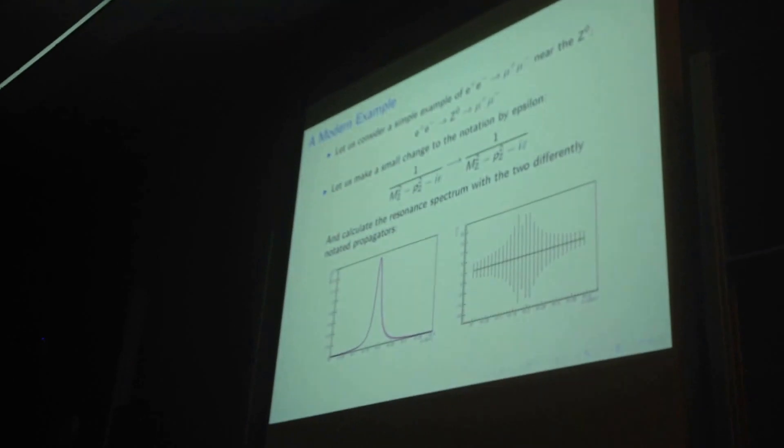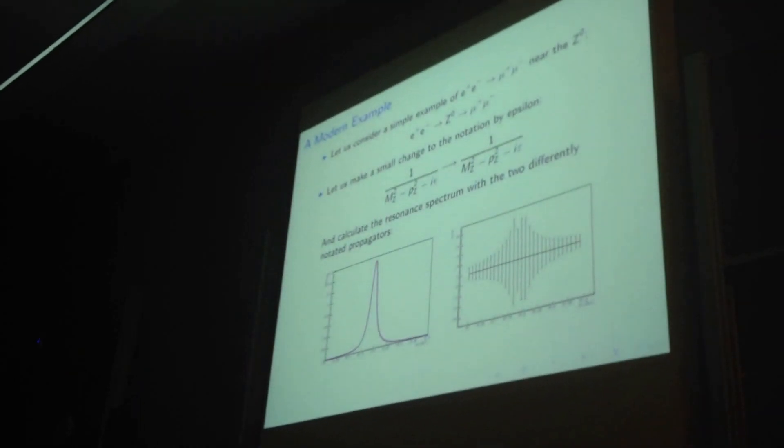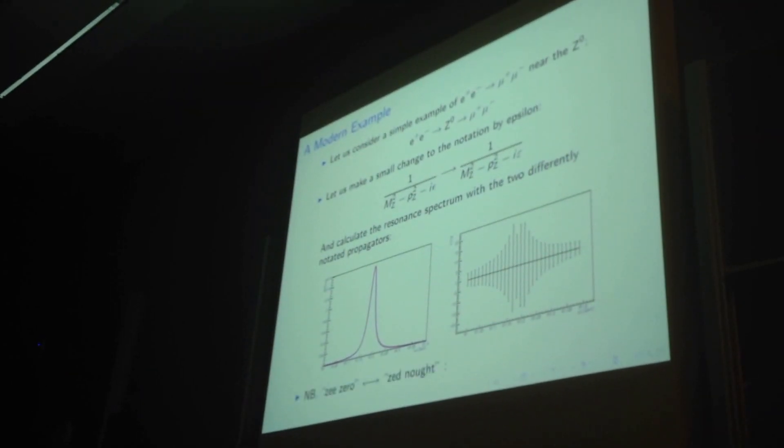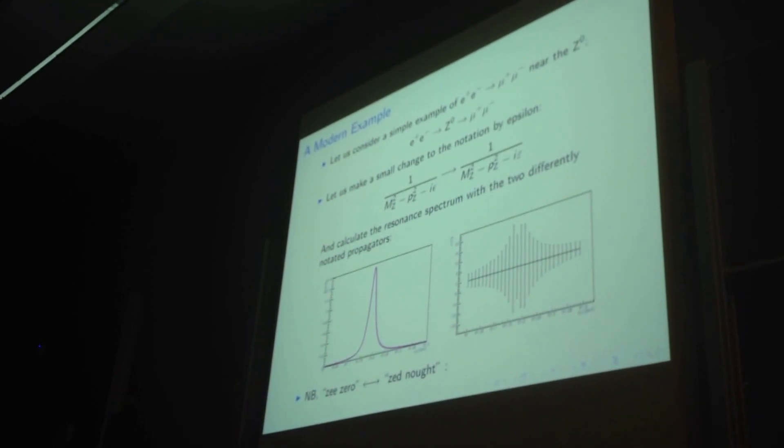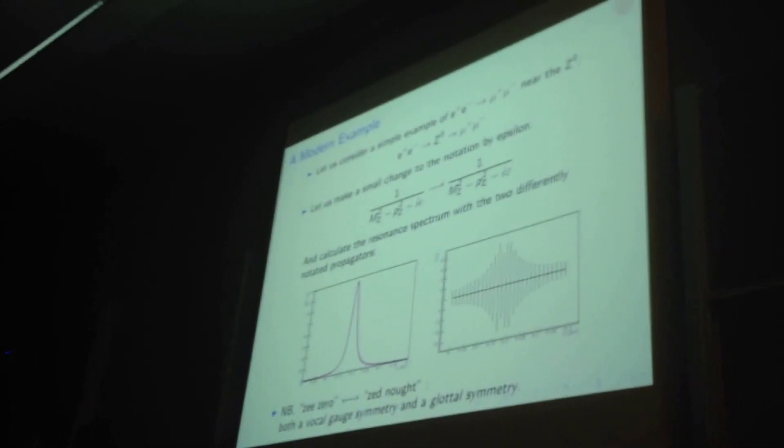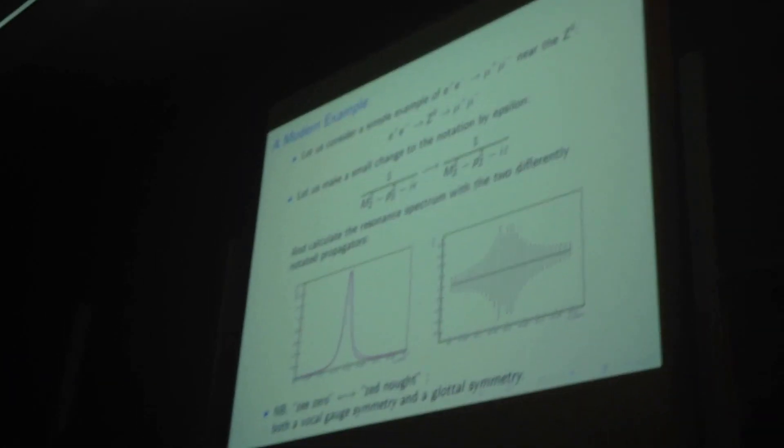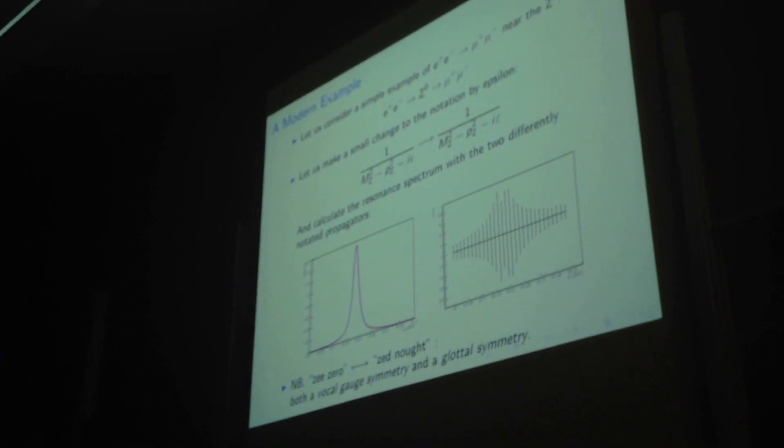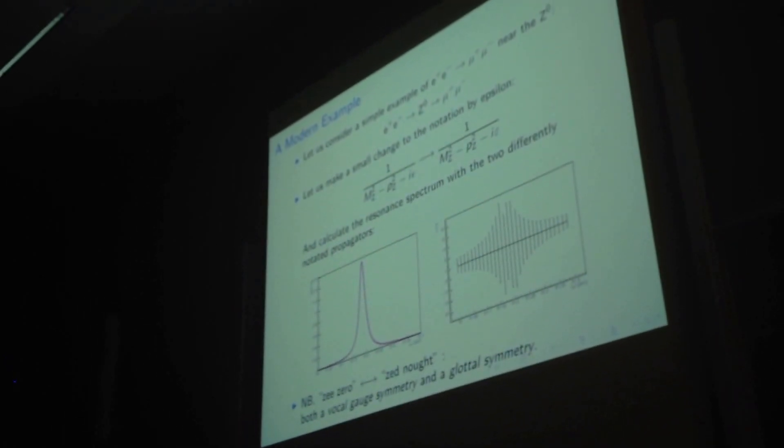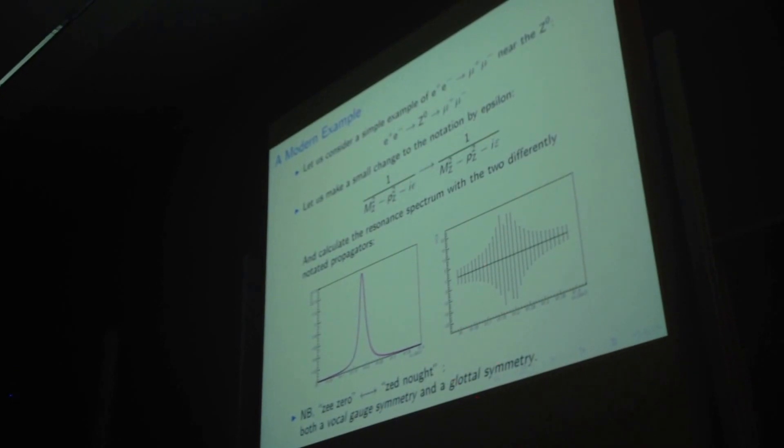I'd also like to point out some side work that we're working on, related to notational variance. Namely, that this equation holds whether you call it the Z zero or the Z naught, which curiously is both a vocal gauge symmetry and a global symmetry.